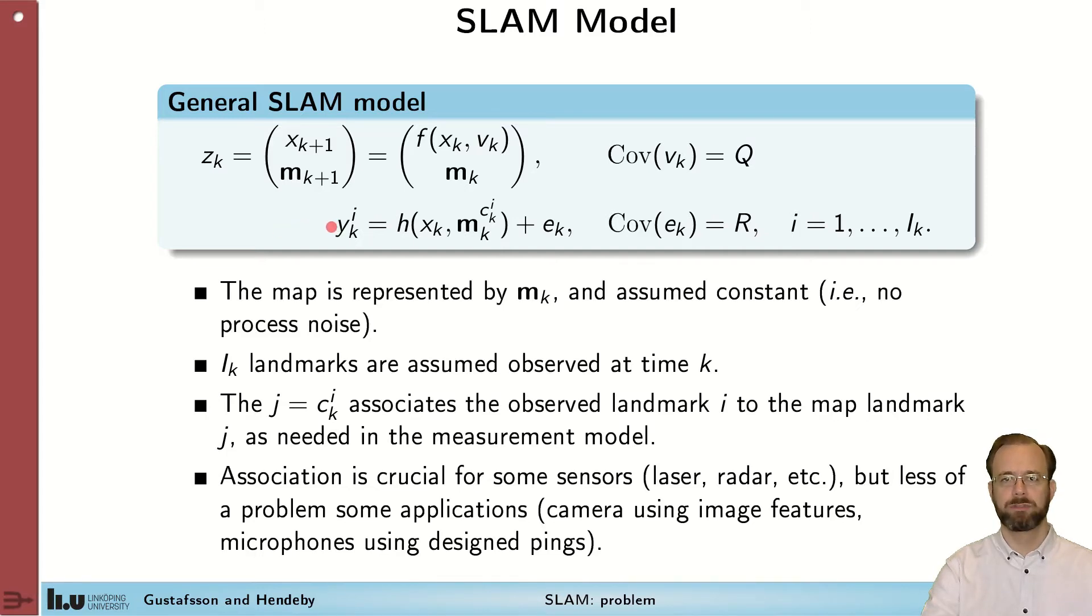The measurements available to the system are measurements of the landmarks. And the measurement function relates the pose of the sensor with the position of the landmarks. We can get several of these measurements during a single time step. And it's not necessarily so that the first measurement in our set matches the first landmarks. So we have to map out which landmark matches the measurement that we have made. This indicator here, c sub-index ki, is the landmark that matches the ith measurement at time k.